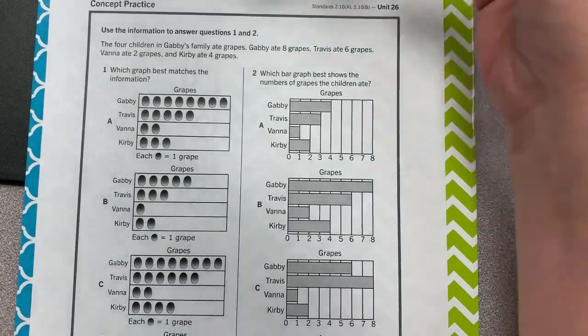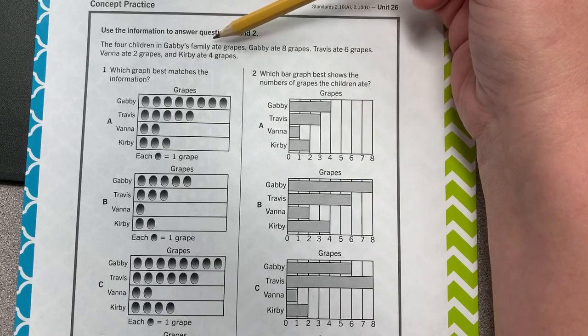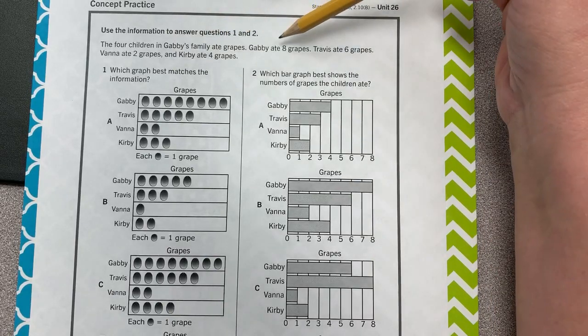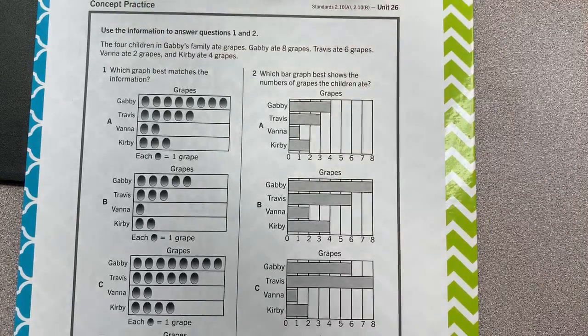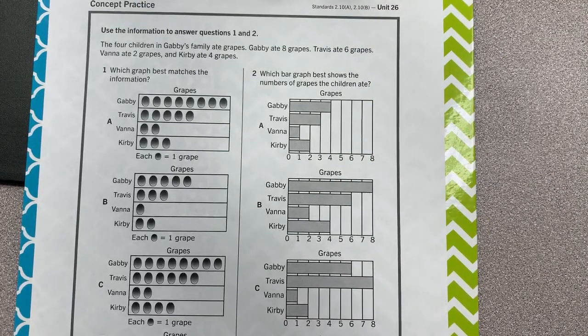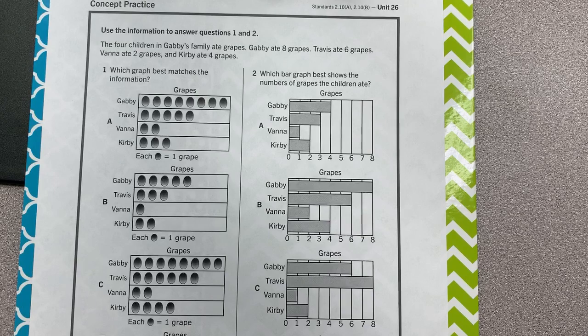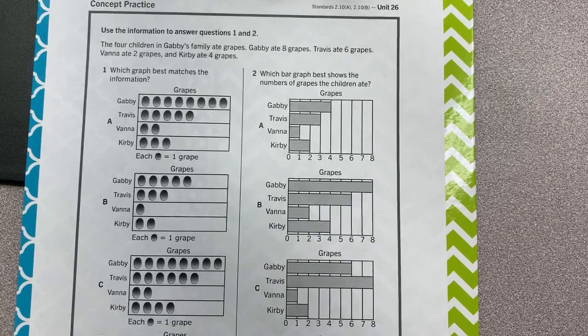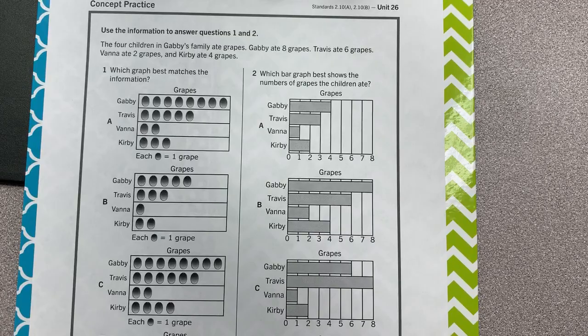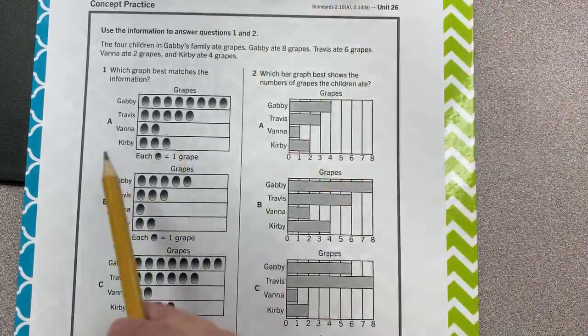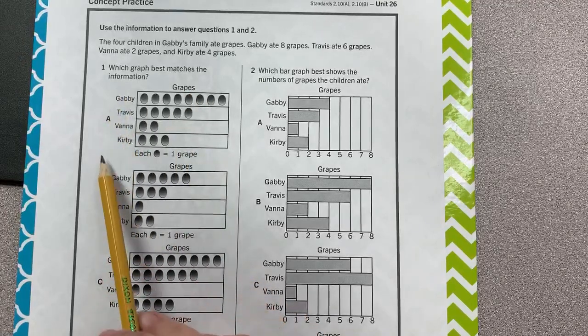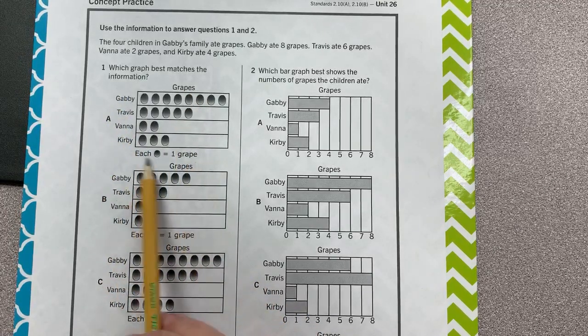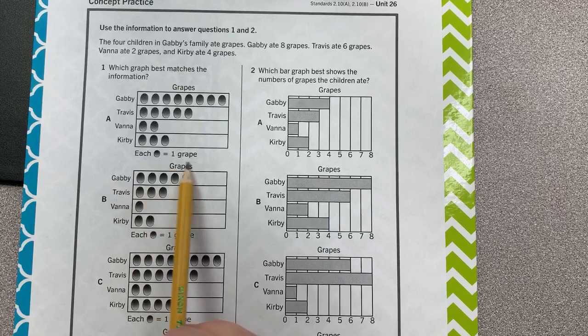Okay. The four children in Gabby's family ate grapes. Gabby ate eight grapes, Travis ate six grapes, Vanna ate two grapes, and Kirby ate four grapes. Which graph best matches the information? Well, let's look at each pictograph. We have our title, we have our labels, we have our scale. Each grape equals one grape.